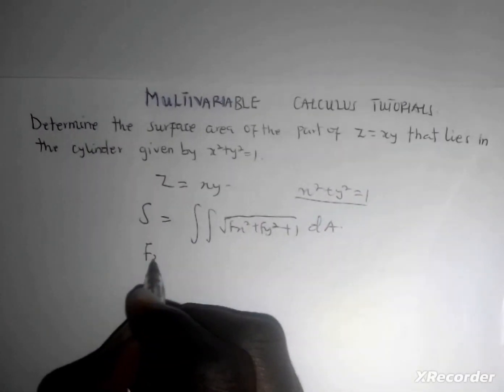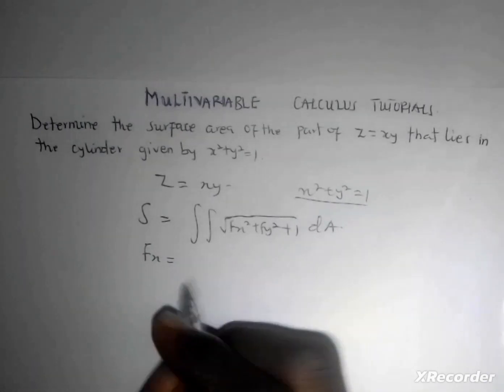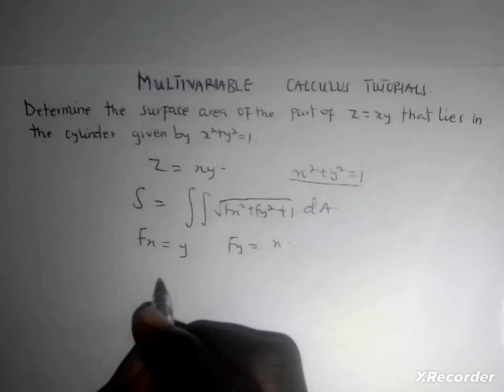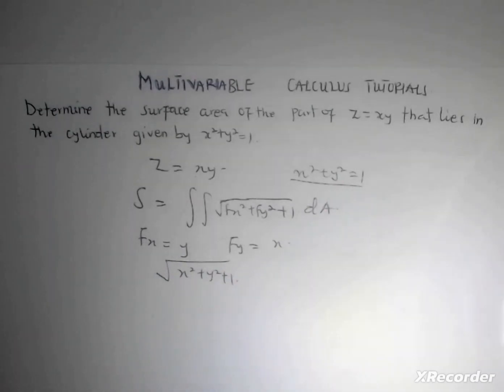With respect to x you get y, and with respect to y you get x. So you get the square root of x² + y² + 1. The next thing to do is to find my limits.